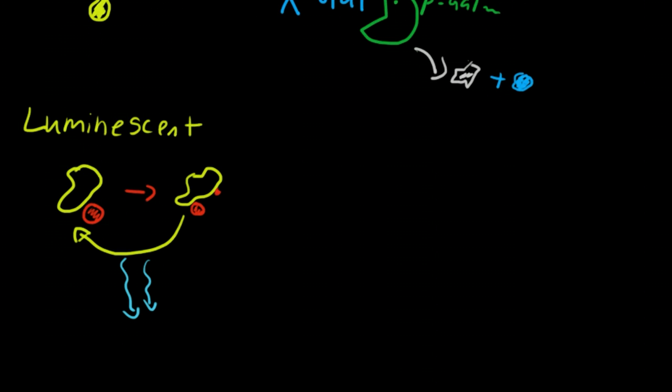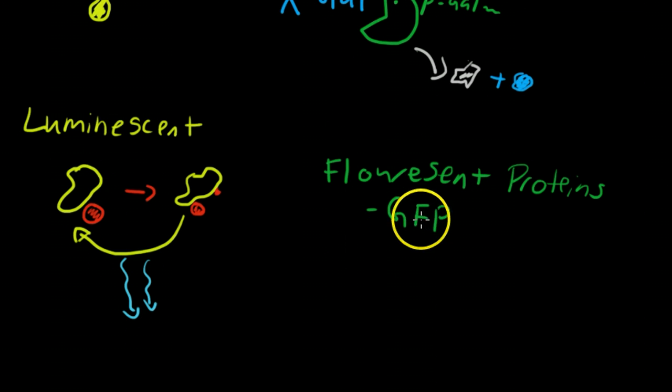And the last type of reporter that I'm going to talk about and probably the most commonly used type of reporter are fluorescent proteins. And one that you've probably heard thrown around a bit is GFP. So we have fluorescent proteins. And so with that, we have GFP, green fluorescent protein, which is derived from jellyfish.